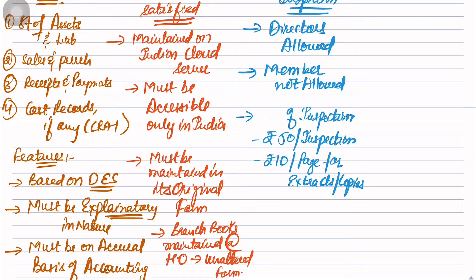If inspection was free of cost, someone will just keep coming repeatedly out of boredom. That's why there is a cost. Cost of inspection - these are the two points you have to write: who can inspect and cost of inspection.